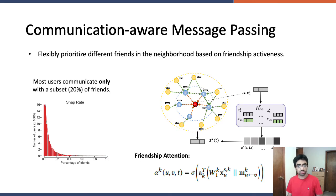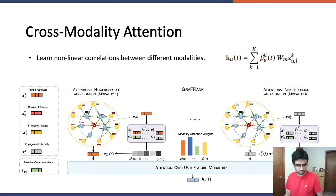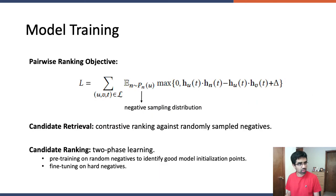We empirically observe that most users communicate only with a subset of their friends, around 20%, which makes friend influence modeling critical during neighborhood aggregation. To flexibly prioritize different friends in the neighborhood based on their friendship activeness, we compute the influence weight for each friend v using an attention module parameterized by the features of user u, friend v, and the link feature e_uv. We find that communication-aware message passing results in a significant boost in friend ranking performance. The second module, cross-modality attention, learns non-linear correlations between different modalities using attentional coefficients beta_uk to distinguish the influence of each modality k. The overall framework of GraphRank is composed of k modality-specific neighborhood aggregators followed by the cross-modality attention module to compute the final user representation. The model is trained using a time-sensitive pairwise ranking loss over the final user embeddings, which ranks the inner product of positive links higher than sampled negatives by a margin factor delta.